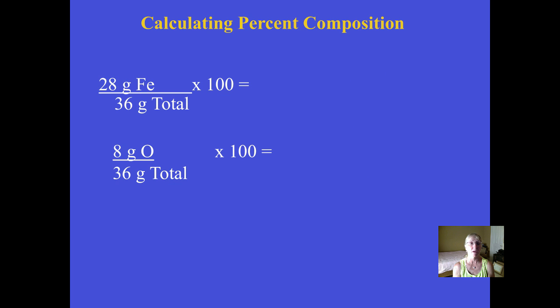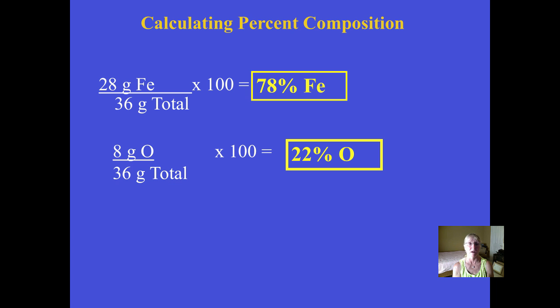Here are the calculations for the first compound made of iron and oxygen. It's the part divided by the whole, so we've taken the grams of iron divided by the total grams.